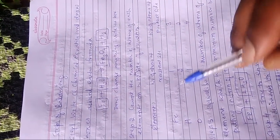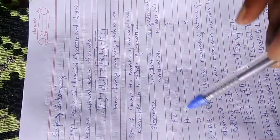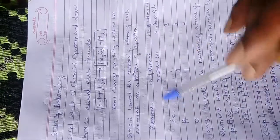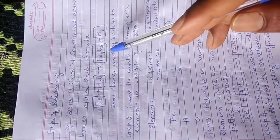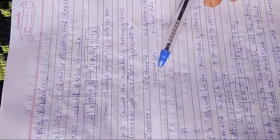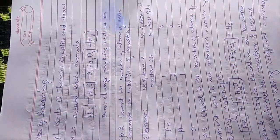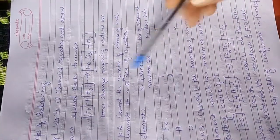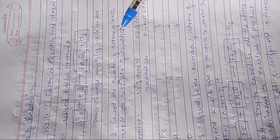Step 2: Count the number of atoms in each element on both sides of the equation. You have to write down how many atoms are there. So we have iron (Fe), hydrogen (H), and oxygen — only 3 atoms are there. Write down the number of atoms present in the reactant side: Fe = 1, H = 2, O = 1.